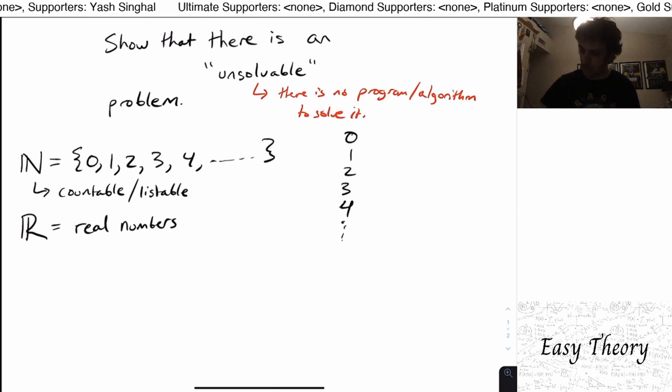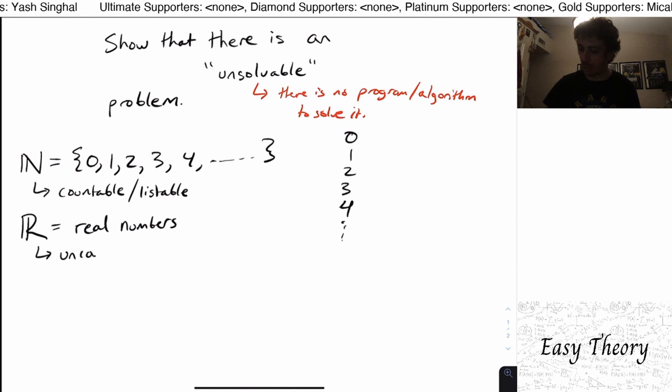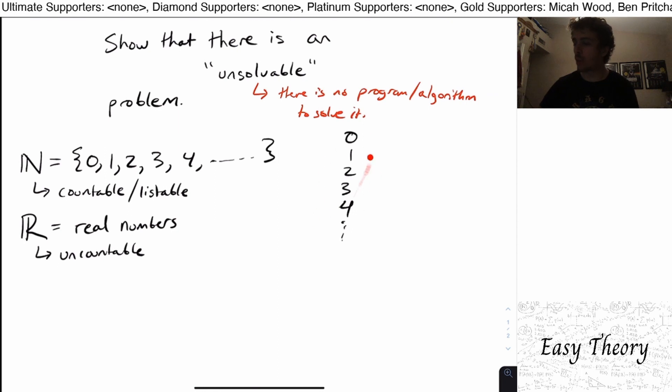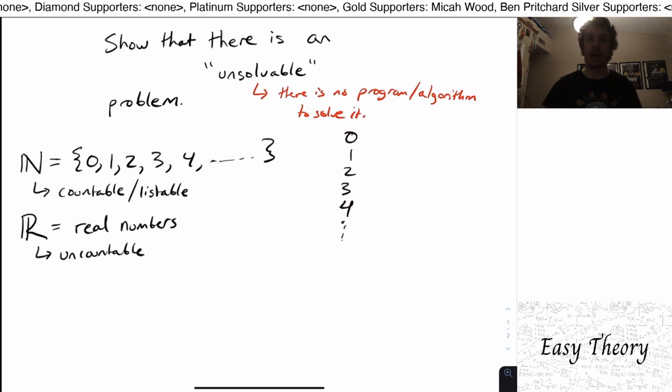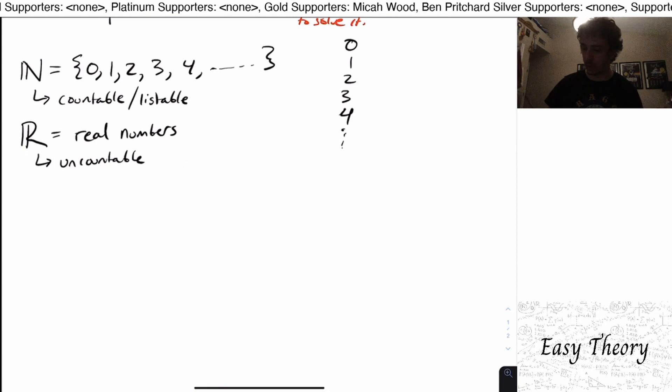It includes all the rational numbers as well as all the irrational numbers. And what you can show is that this set is uncountable. And that is unlistable. There's no way to write the real numbers into a list so that you will have every number on the list. And we can actually show this really quickly.